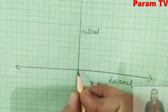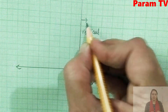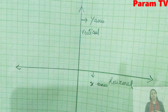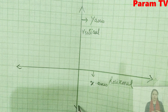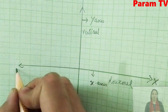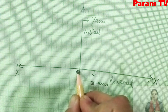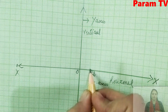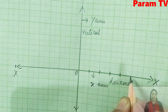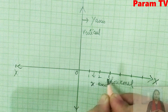Wherever the x-axis is, this is the y-axis. We write it like this with arrows. The x-axis has this point as 0. On one side we have positive points: 1, 2, 3, 4, 5. If you remember the number line, these are positive numbers.